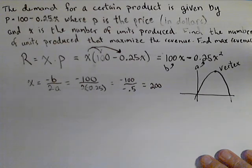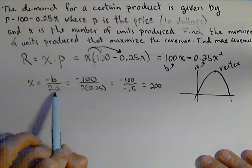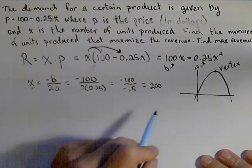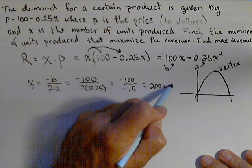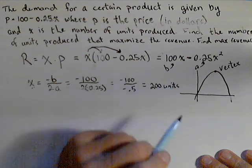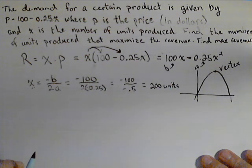Now, something to think about is what is that 200? Well, this formula gives you the input of the vertex, or the x, so that's 200 units. So that's how many units they should be producing and selling in order to maximize their revenue.